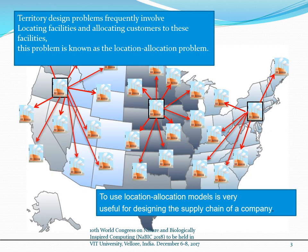Territorial design problems frequently involve locating facilities and allocating customers to these facilities. This problem is known as the Location Allocation Problem. Using Location Allocation Models is very useful for designing the supply chain of a company.